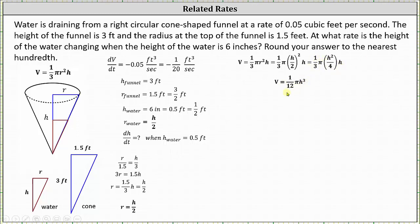And now we differentiate both sides of the equation with respect to t. On the left, we have dV/dt. On the right, we differentiate 1/12th pi h cubed with respect to t, which gives us 1/12th pi times 3 h squared times dh/dt. Let's go ahead and simplify here. 1/12th times three is 3/12ths, which simplifies to 1/4th, giving us dV/dt equals 1/4th pi h squared times dh/dt.